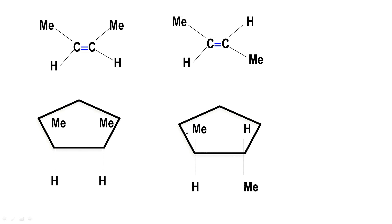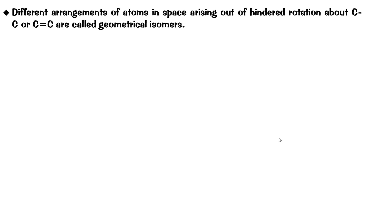The same is true even if you have a ring with a single bond. Even though it is technically a single bond, it is part of a ring, so it is not possible to twist it - if you try to rotate these two groups, the entire ring would twist. You cannot flip the groups across and convert one isomer to the other. These are frozen and are called geometrical isomers. Geometrical isomers are different arrangements of atoms in space arising out of a hindered rotation about a single bond in a ring or a double bond.